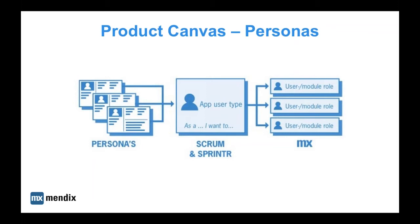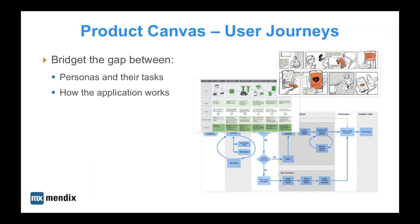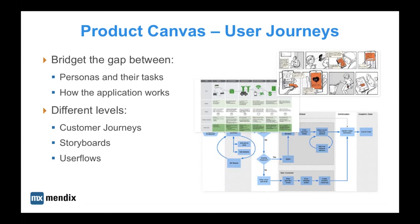After researching our users — knowing who they are and what they need to accomplish — creating user journeys bridges that gap by sketching out the journeys users will undertake. There are different levels of abstraction: customer journeys, more common in marketing, map out the total experience; storyboards are much more concrete and offer a great way to add context and enable storytelling, looking a bit like graphic novels; and at the lowest level of abstraction we have user flows, which are quite similar to microflows. Creating user flows is the advised minimum for most projects. In almost every case, a user journey can be translated into an epic, which can be split into user stories and tasks for a sprint.